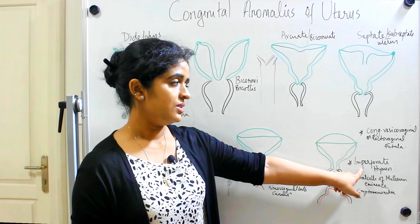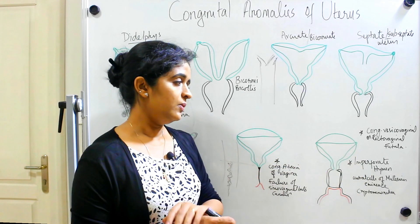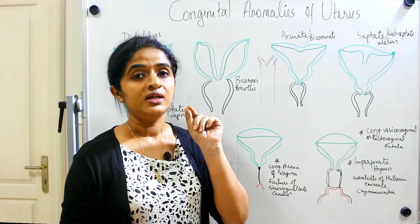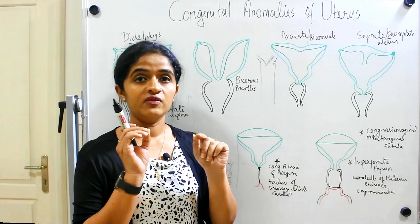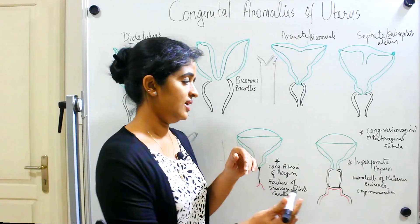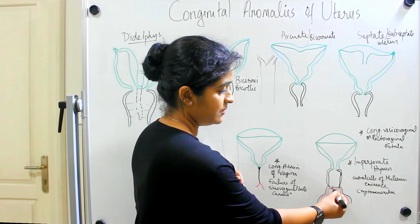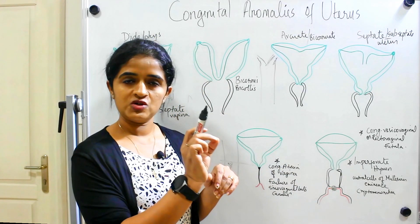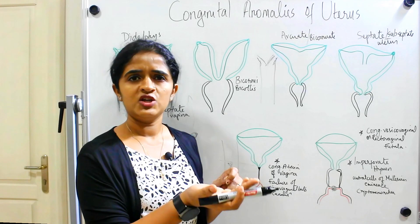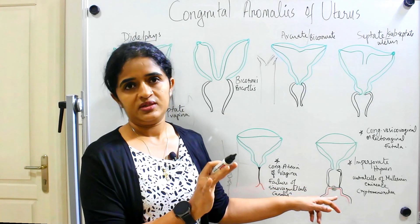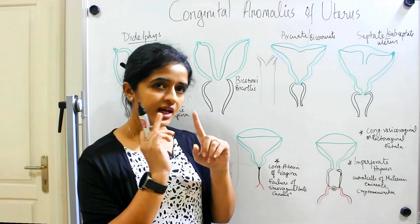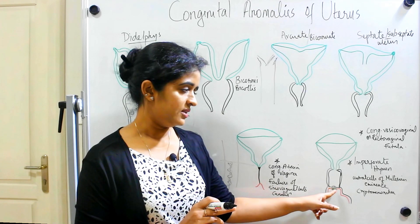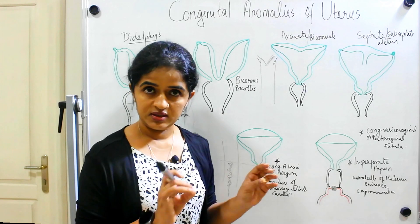The next condition is imperforate hymen. The hymenal orifice is formed due to the disintegration of the endodermal cells coming from the urogenital sinus, resulting in an opening that forms the hymenal orifice present in a female child soon after birth. If the endodermal cells at the point of the Mullerian tubercle are not disintegrating, there will be no orifice formed there.